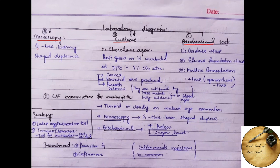In microscopy we can see them as gram-negative, kidney-shaped diplococci in culture.